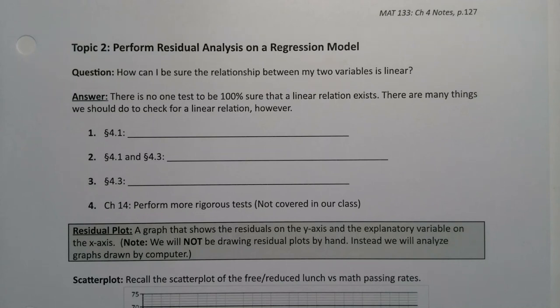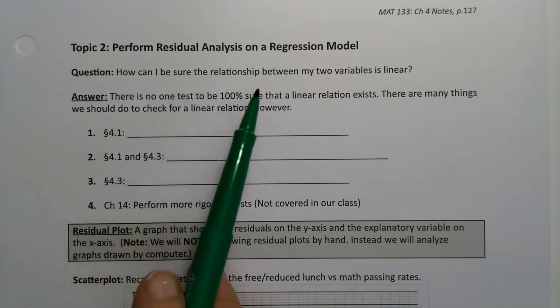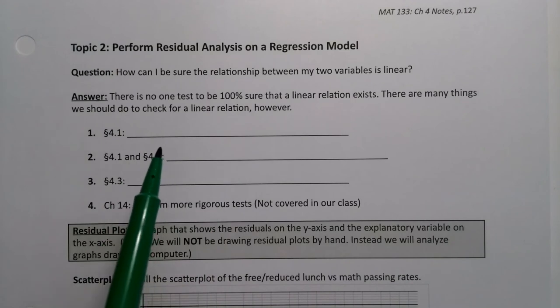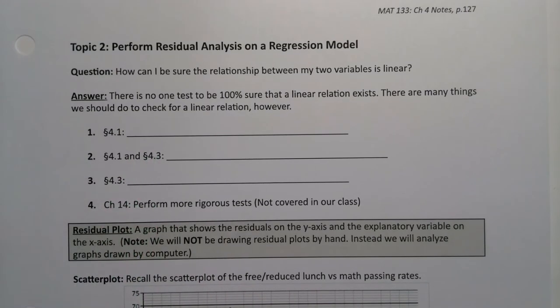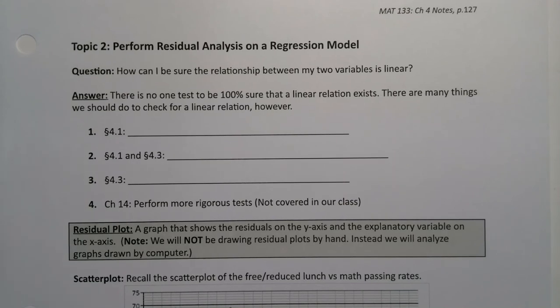The next analysis we want to do on our regression model is residual analysis. So the question can arise, how can I be sure the relationship between my two variables is linear? And the answer is it's complicated. There is no one test to be 100% sure that a linear relationship exists, even if you think you see one visually. But there are a lot of things you do to check for a linear relation.